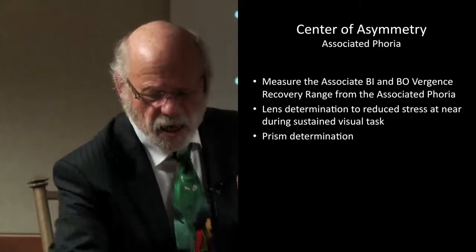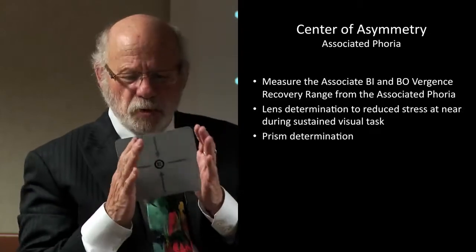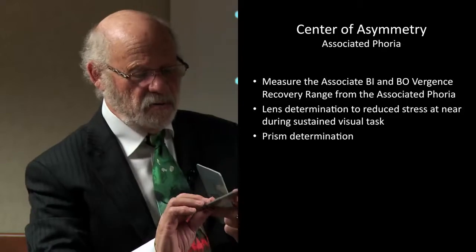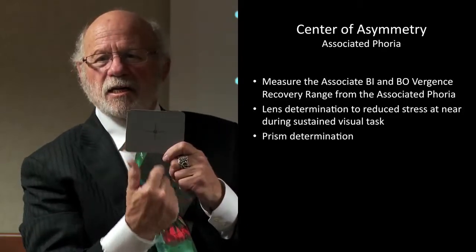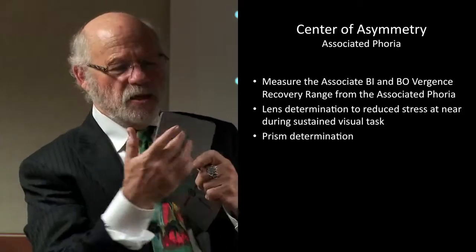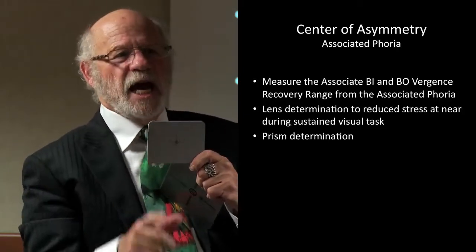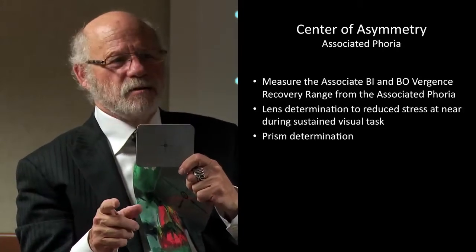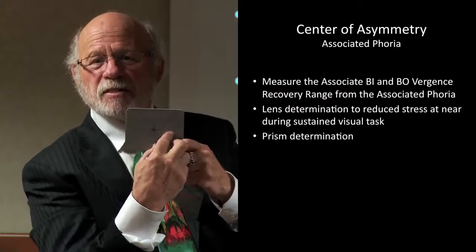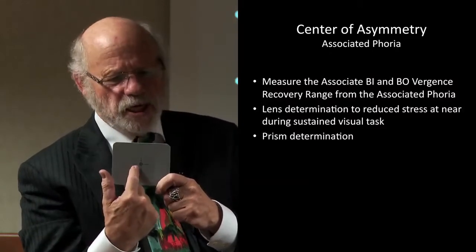When you put this target in front of a patient at near or far — say at 18 inches — and I ask, are those lines straight? If they say no, they're off, they're moving — that is an associated phoria. It's a phoria where the eyes are out of alignment in the state of fusion. So if it's a convergence insufficiency case, I go to whatever base-in prism I need until they say they're lined up. Now I've got a measure of what lines them up at far and near.